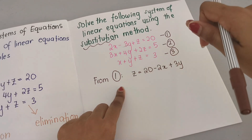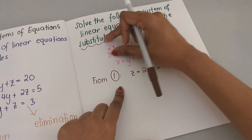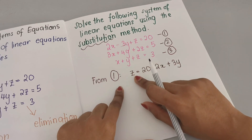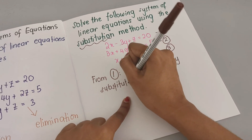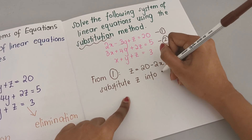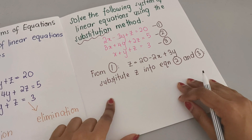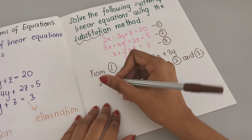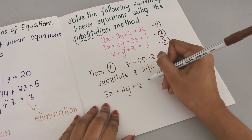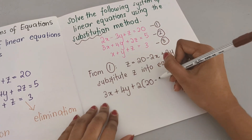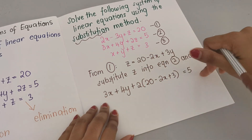Now substitute z into equation 2 and equation 3. Substituting into equation 2: 3x plus 4y plus 2 times (20 minus 2x plus 3y) equals 5.